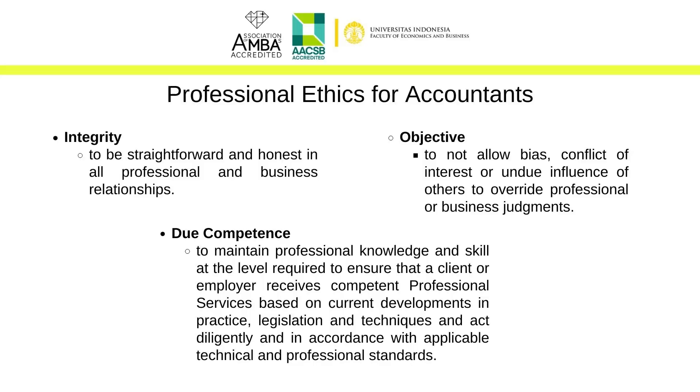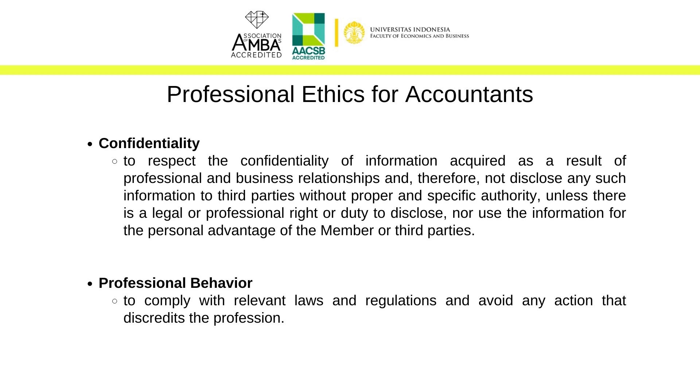Now we move to the theoretical question based on our NASP courses. There are five aspects in the ethical accounting standard: integrity, objectivity, due competence, confidentiality, and professional behavior. All accounting and audit companies should not violate any of these ethical standards, because they can receive sanctions for violating even just one of them. Based on these ethical accounting standards, what aspect do you think Company A violated? Starting with Stefan.